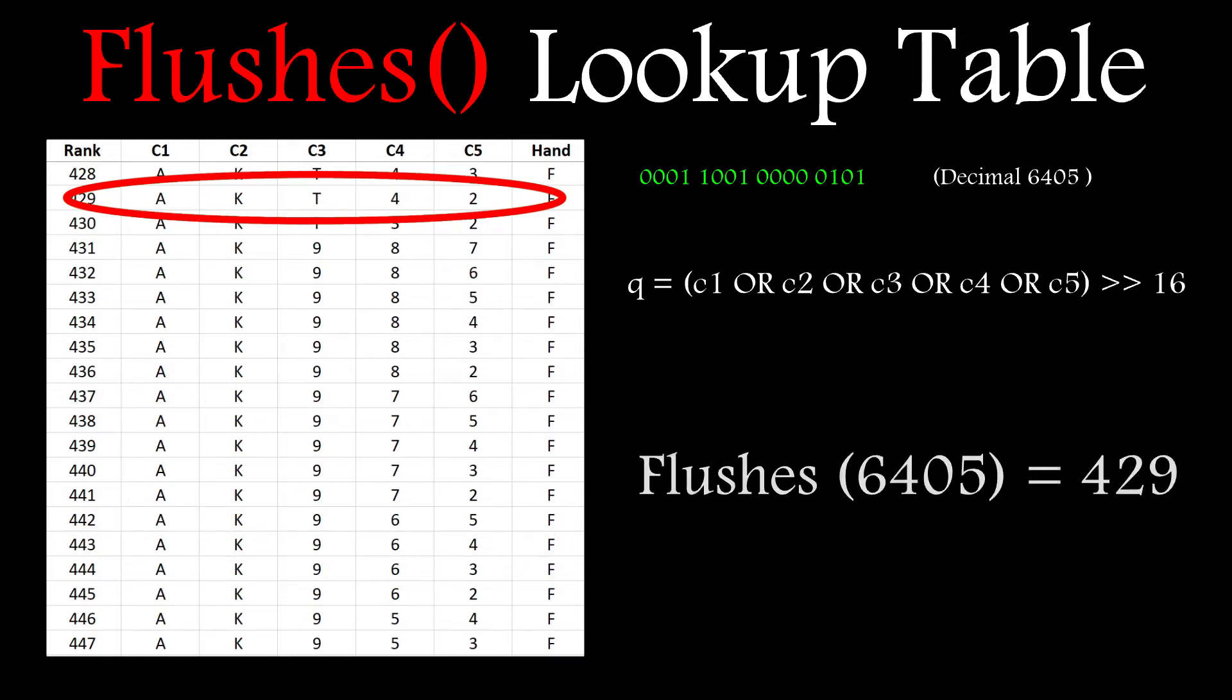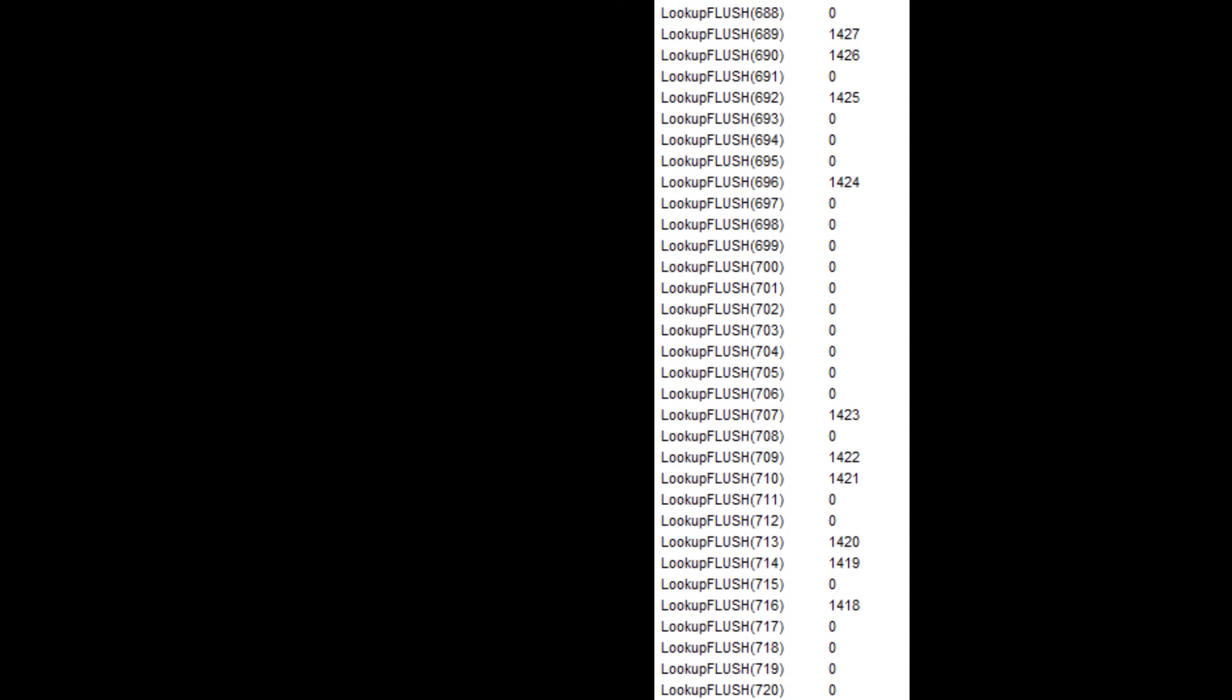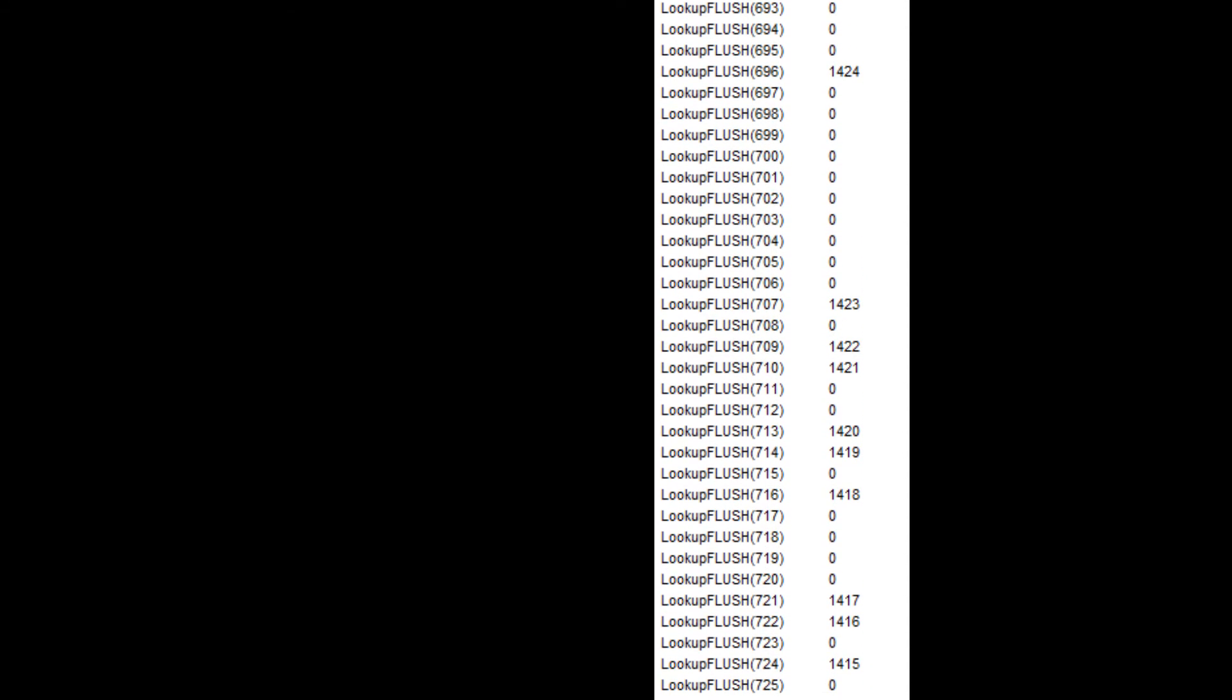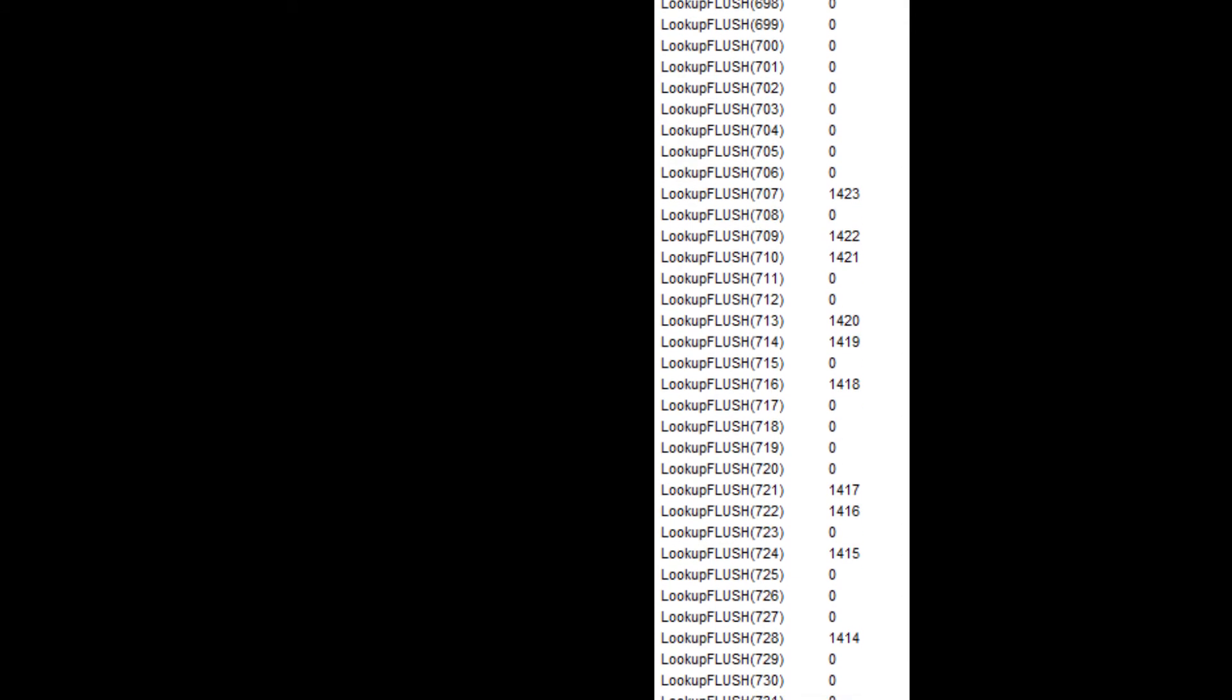So I go to my flushes array to row 6,405 and pop in the hand rank of 429 for that card combination. And I go through the entire hand equivalency table and I do this for every flush that I find. At the end of all this, I have a fully populated flushes array. Most of the entries are zero, but I can now use this to check the hand rank of any flush combination in the deck.